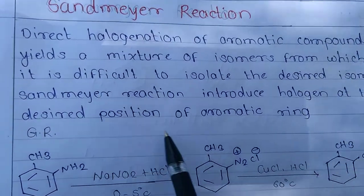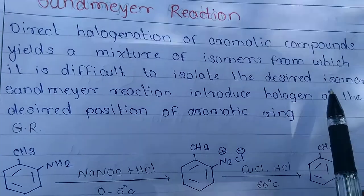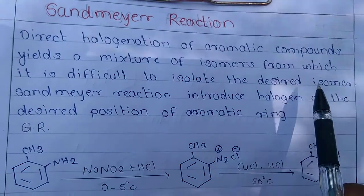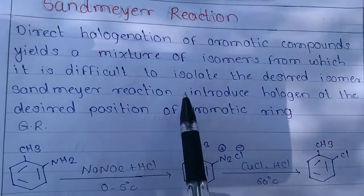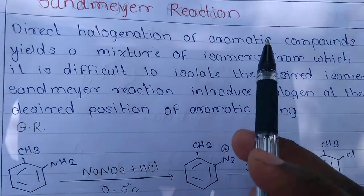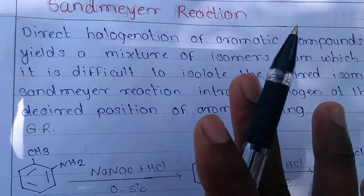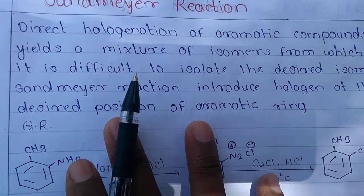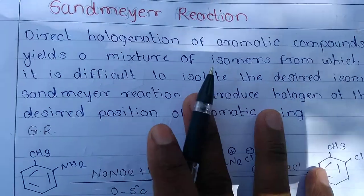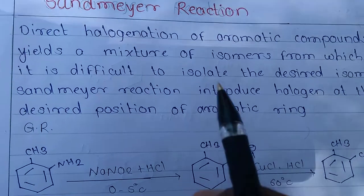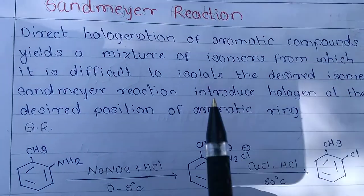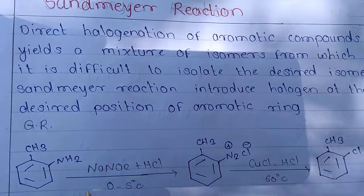So the solution is the Sandmeyer reaction, which allows us to introduce a halogen at the desired position of the aromatic ring.